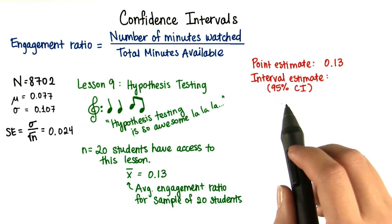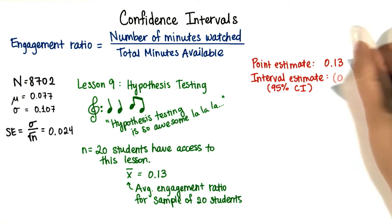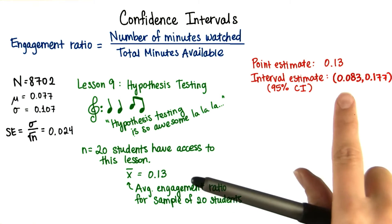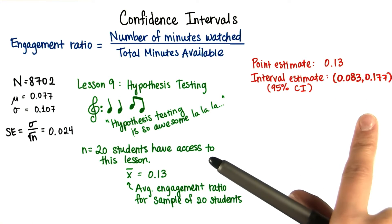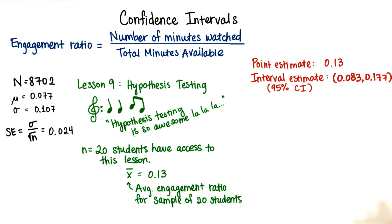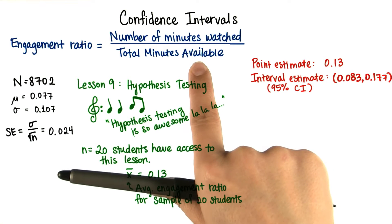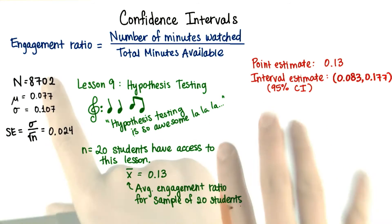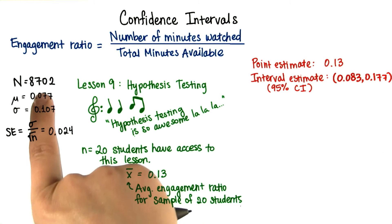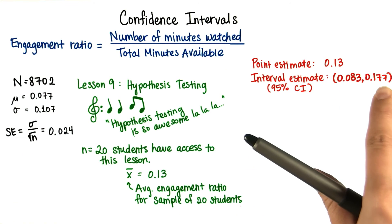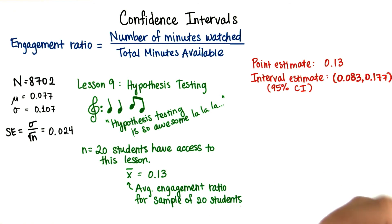So our interval estimate for the 95% confidence interval has a lower bound of 0.083 and an upper bound of 0.177. Always remember what these numbers mean — this is the ratio of minutes watched of all the lessons to total minutes available. We're predicting that the entire population of 8,702 students will watch between 83 thousandths and 177 thousandths of all content available.